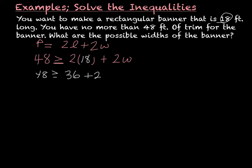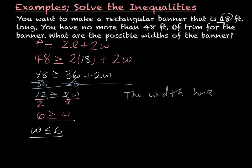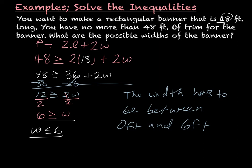So forty-eight is greater than or equal to two times eighteen, which is thirty-six, plus two W. Subtracting thirty-six gives twelve is greater than or equal to two times W. Dividing by two: six is greater than or equal to W, or you may write W is less than or equal to six — they mean the same thing. The width has to be between zero and six feet. It can't be less than zero because you can't have a negative width. So that is your final answer.